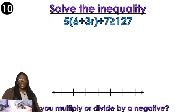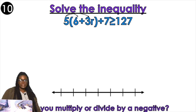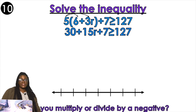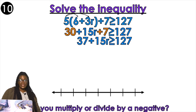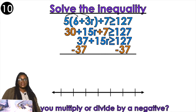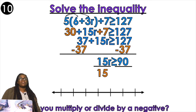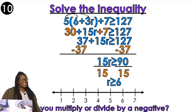Last example — distribute. 30 plus 15r plus 7 is greater than or equal to 127. Combine like terms: 37 plus 15r is greater than or equal to 127. Get rid of the constant. 15r is greater than 90. Divide by the coefficient — was that coefficient negative? No — so are you flipping the symbol? No. R is greater than or equal to 6. Number line — open circle or closed circle? Closed circle. Left or right? To the right.